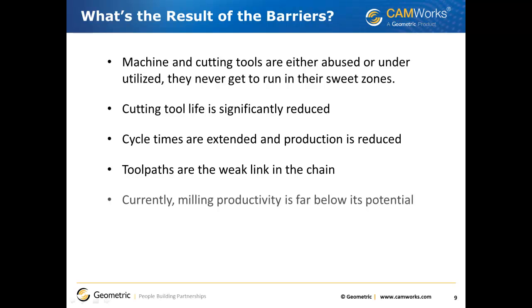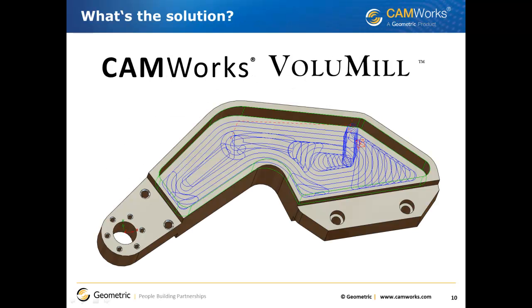The result of inefficient toolpaths is that the machine and cutting tools are either abused or underutilized — they never get to run in their sweet zones. Cutting tool life is significantly reduced, cycle times are extended, and production is reduced. Toolpaths are the weak link in the chain, and as a result, milling productivity is far below its potential.